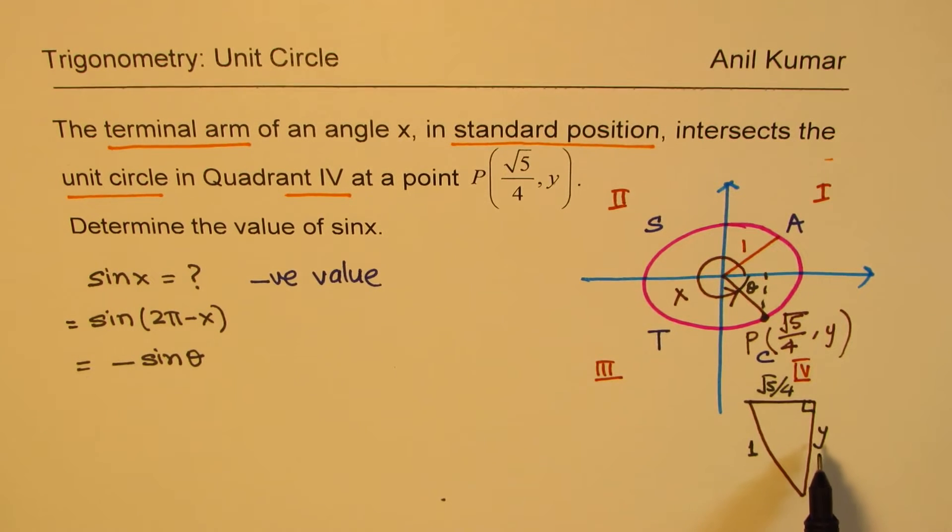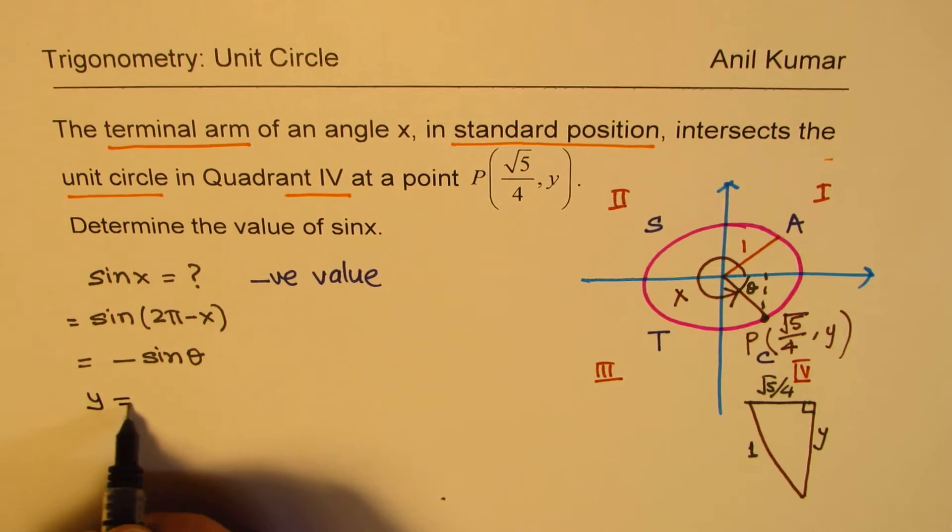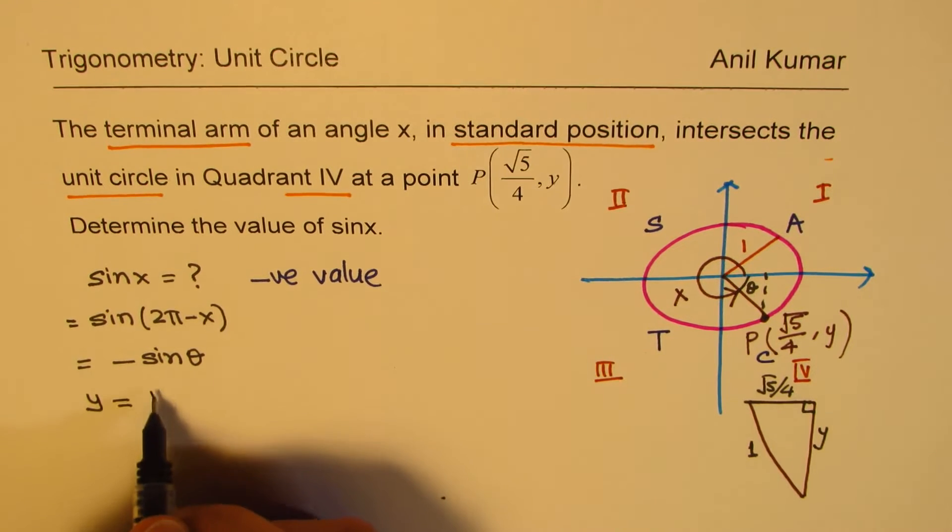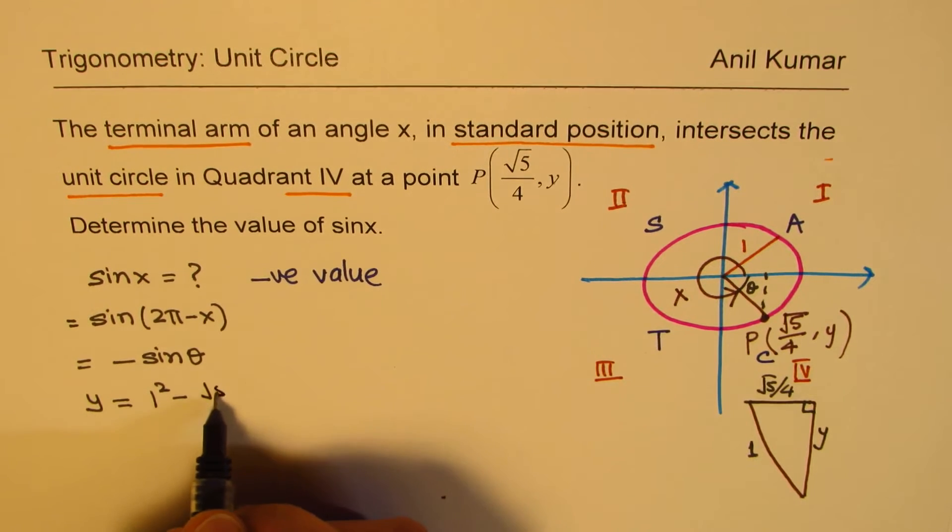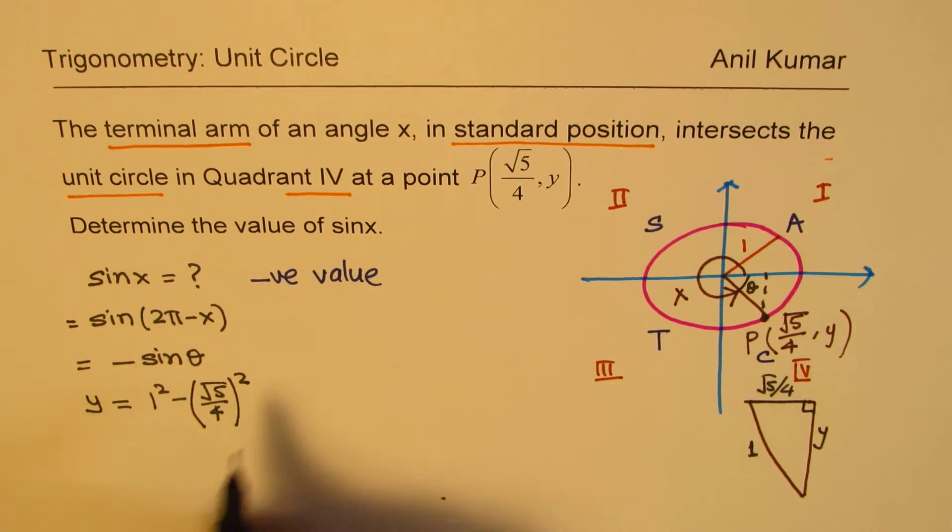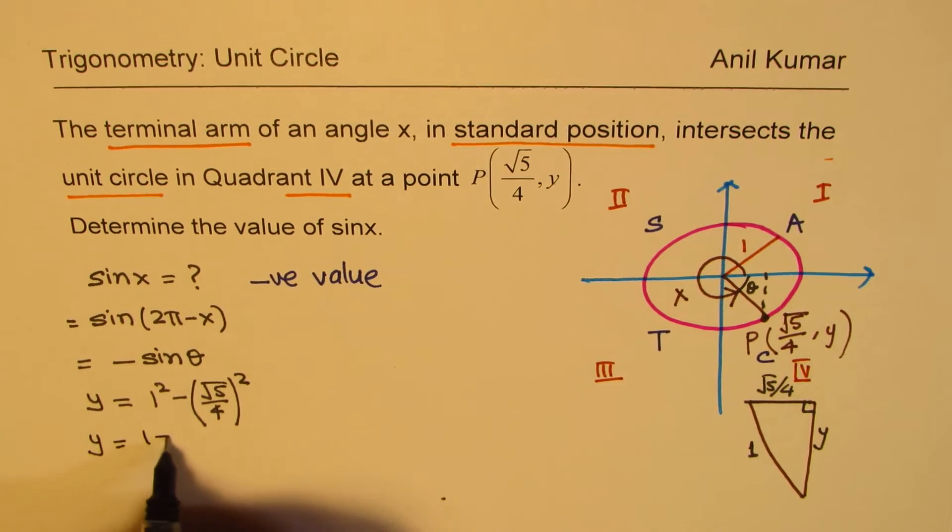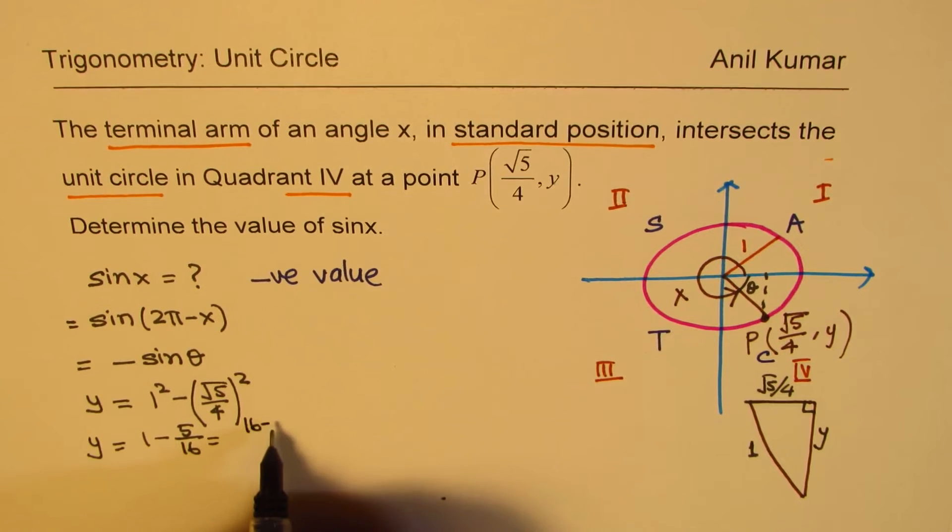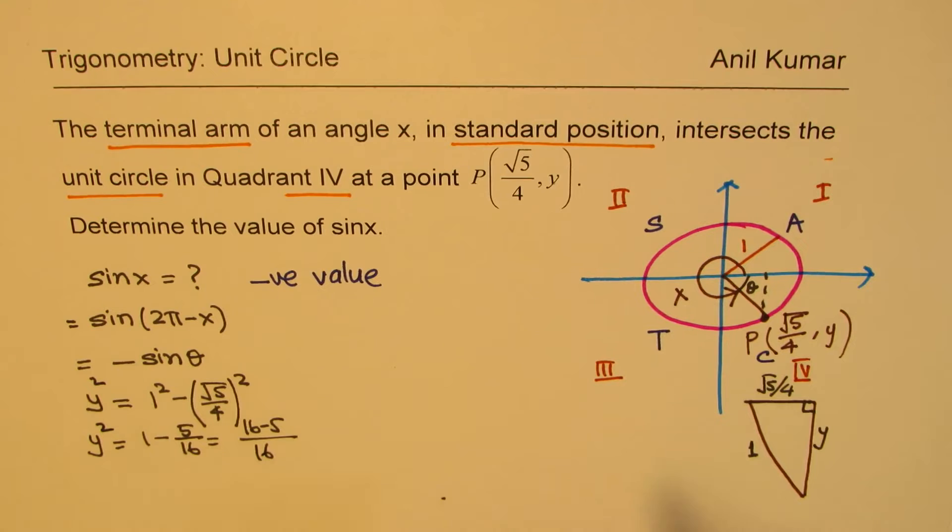We can use Pythagorean theorem to find this Y: 1 squared minus that squared. So from here, we can get Y is equal to 1 squared minus square root of 5 over 4 whole squared. So that gives you a value of Y as 1 minus 5 over 16, and that is 16 minus 5 over 16. This is Y squared. Which is 11 over 16. So that is Y squared.